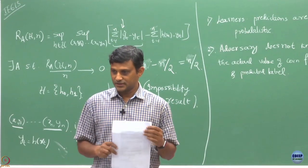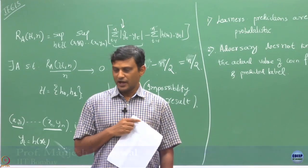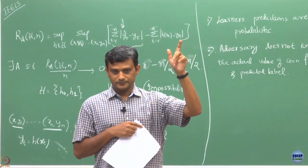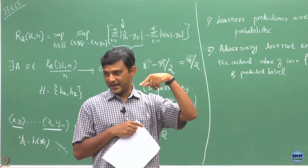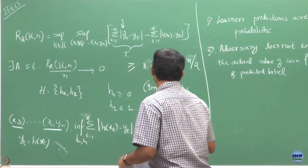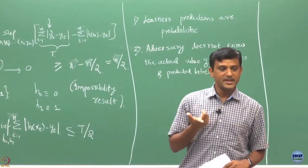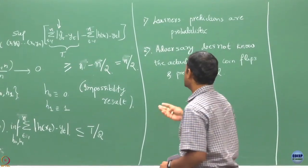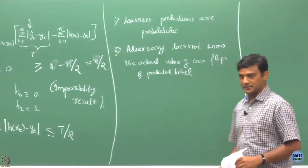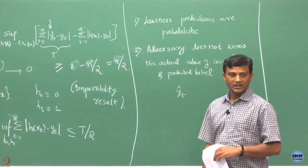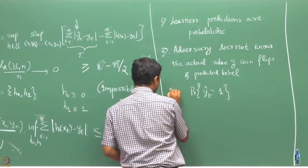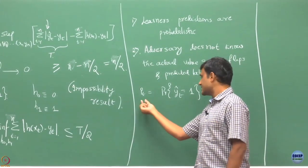The only restriction we are putting on the adversary is that he cannot see your prediction before he declares the label. Now how does things change with this? We are allowing the learner to confuse the adversary, because you are making a randomized prediction. Even if the adversary looks at your final prediction, he may not know what the actual value you would have predicted. With this restriction on the adversary, maybe the learner can do something better. With this assumption, ŷt in round t is no more deterministic, so we start dealing with pt — the probability that ŷt equals 1. This is now the strategy of the learner.